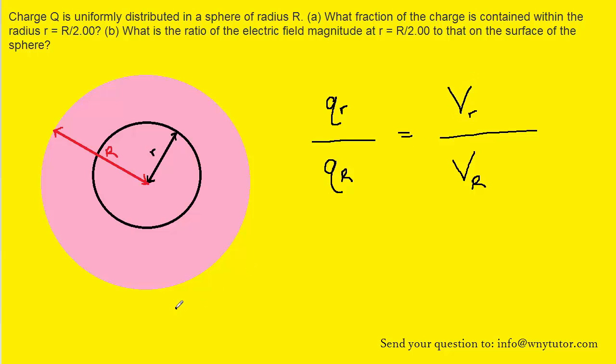Now, of course, the volume of a sphere is equal to 4 thirds times pi times its radius cubed. And so that means we can come up and make a substitution for what we called v sub r. We can replace that with the actual expression for the volume of that sphere whose radius was lowercase r. So we'll have 4 over 3 times pi times lowercase r cubed.